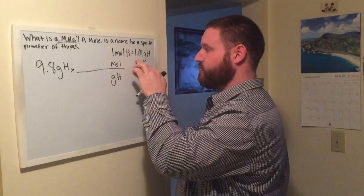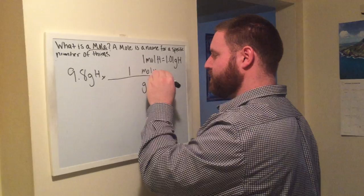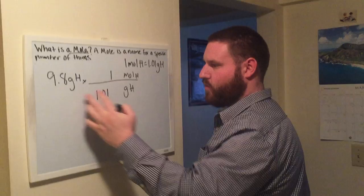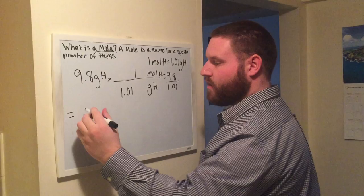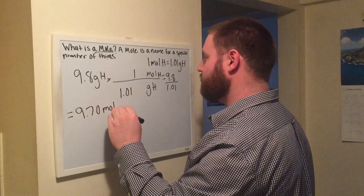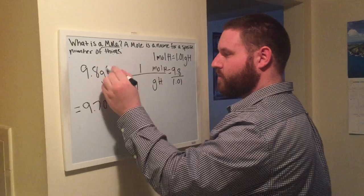So moles will go up top, grams of hydrogen will go down bottom. We just said that one mole of hydrogen is equal to 1.01 grams of hydrogen. Now, 1 times 9.8 is equal to 9.8. So it'll be 9.8 over 1.01 and that equals out to be 9.70 moles of hydrogen.